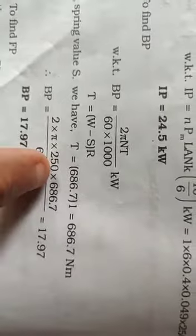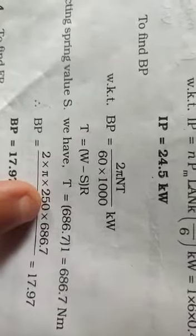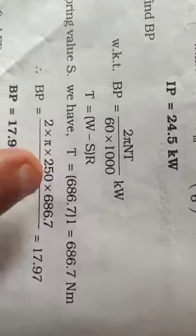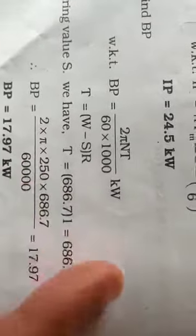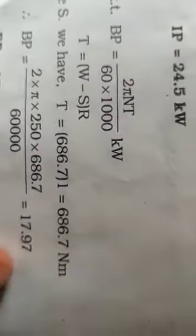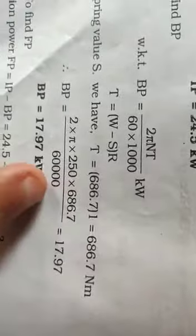BP equals 2 into pi into n is 250. When calculating BP, you have to take full n only; there is no k here in BP. Only in IP equation you get k. K equals 1 for two-stroke and k equals 1/2 for four-stroke. Torque is 686, this is divided by 60,000, so you get 17.97 kilowatts.